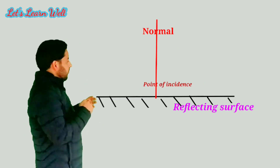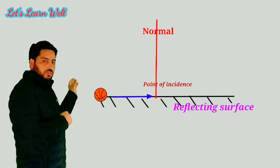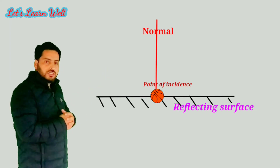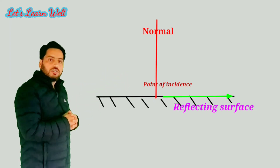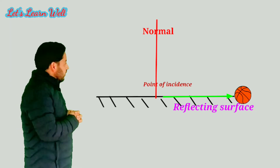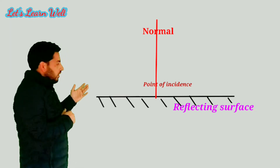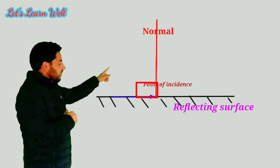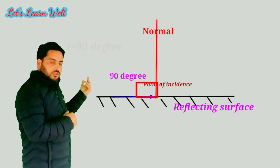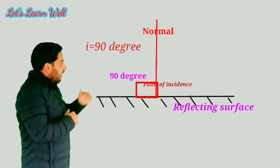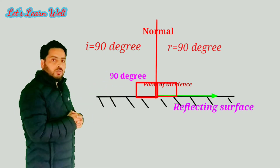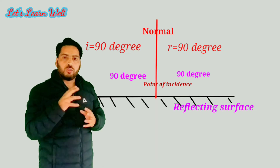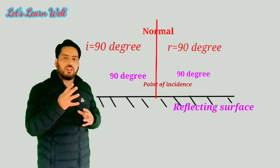Now if we throw a ball along the reflecting surface, the ball on hitting the point of incidence will move along the reflecting surface. If we consider the angle between the normal and the path taken by the ball, that will be 90 degrees — so the angle of incidence will be 90 degrees, and the angle of reflection on the other side will also be 90 degrees. From these two extreme cases we can conclude that the angle of incidence is always equal to the angle of reflection.